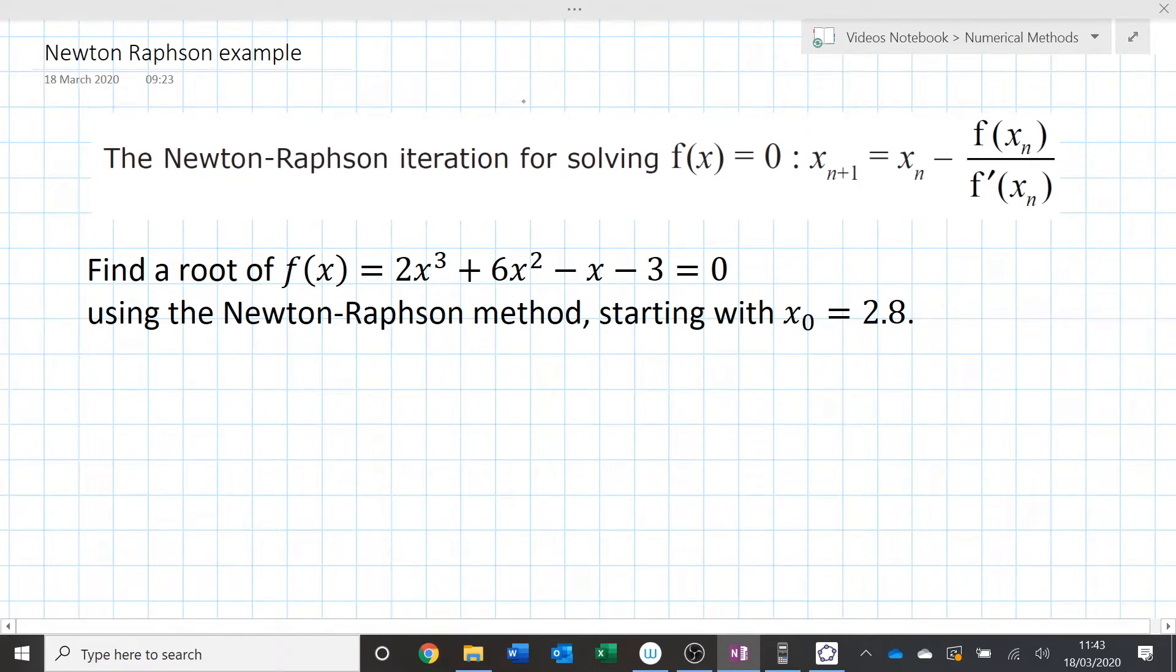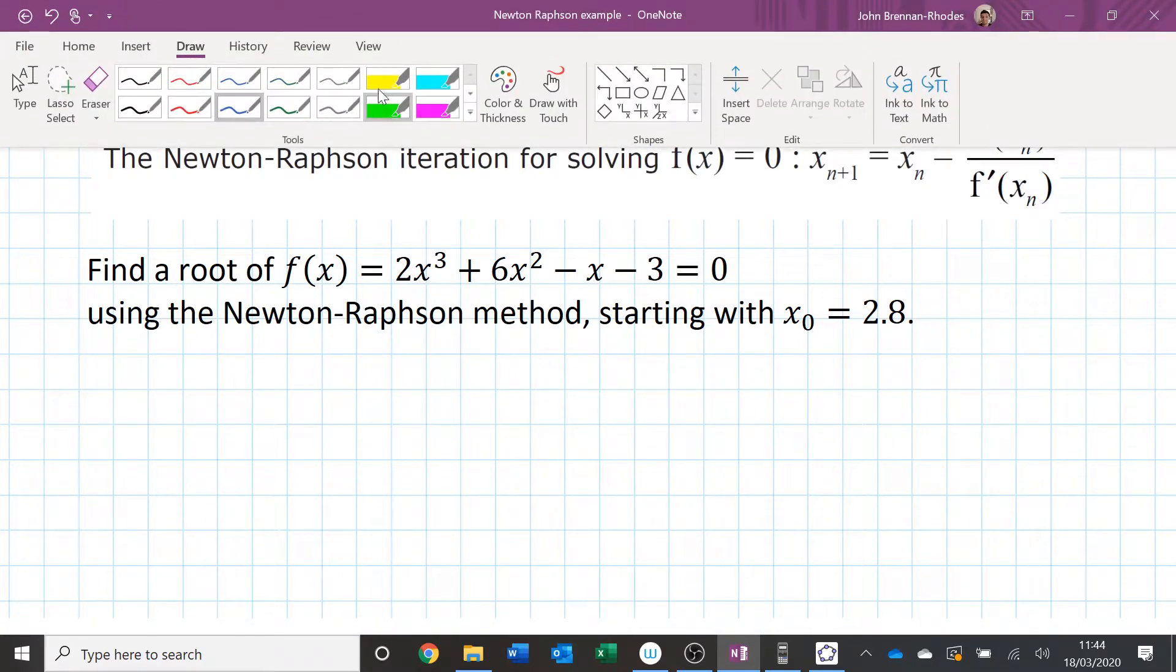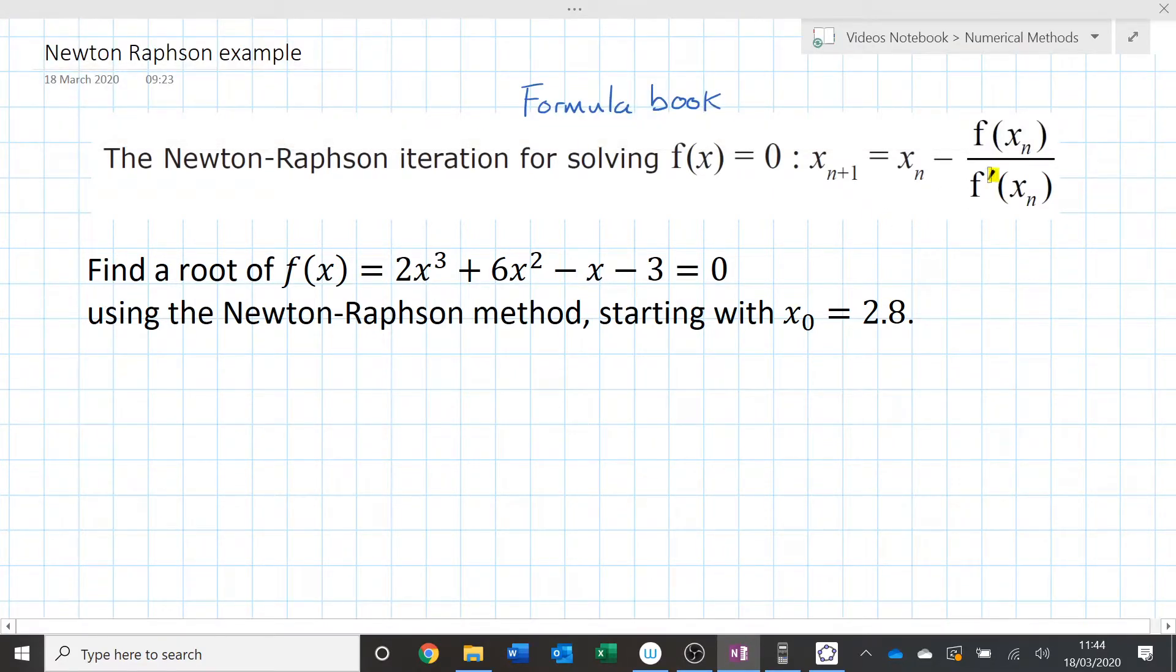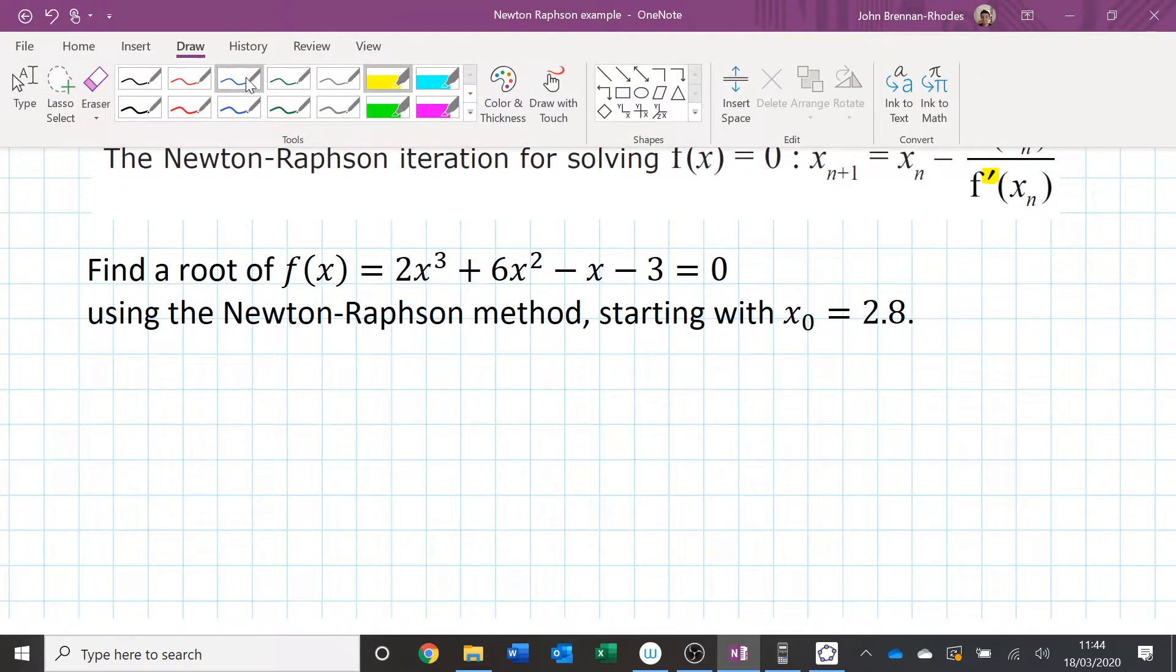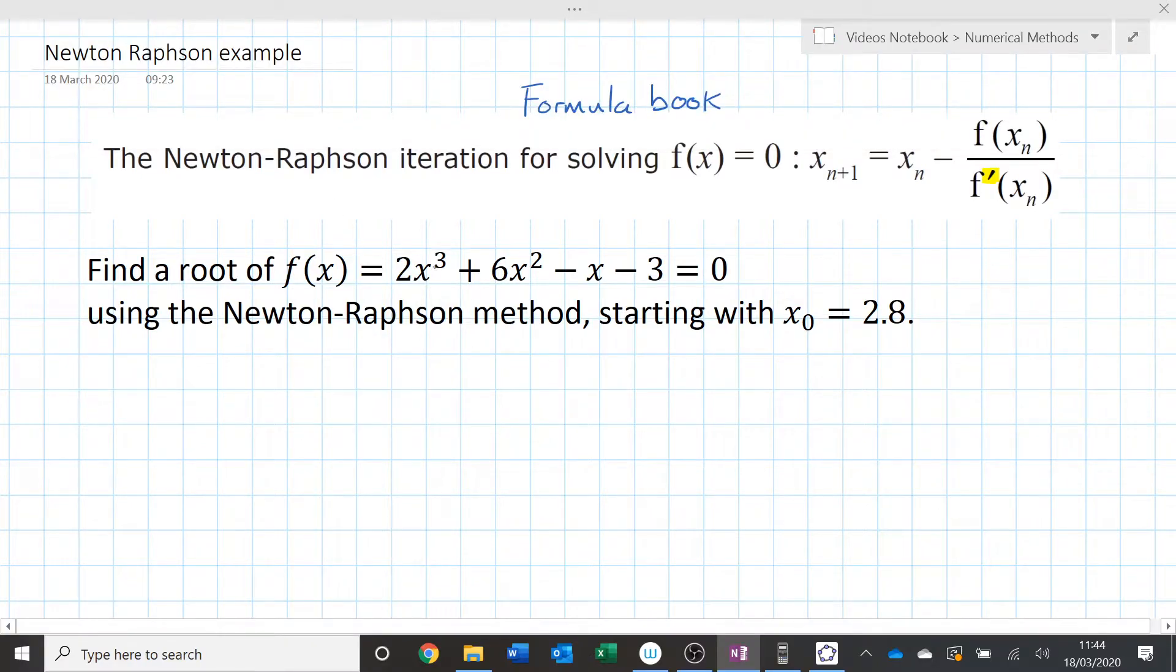So let's do an example. So, this is from the formula book. This is what it says in the formula book, exactly as I said. So you don't have to remember that. It's not that hard to remember. I guess the biggest mistake that people make is they put the derivative on the top rather than the bottom. It's important to note that the derivative is the one on the bottom. So if I'm doing a question like this, the first thing I'm going to do is I'm going to look at this and I'm going to differentiate it.